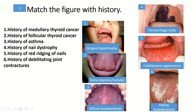A history of follicular thyroid cancer could be found in Cowden syndrome, which manifests with multiple papules in a cobblestone configuration as seen in figure 5. A history of asthma could indicate a patient receiving corticosteroid sprays long-term, which could result in a hemorrhagic bulla. And a history of nail dystrophy could be found in dyskeratosis congenita, which manifests with the triad of skin pigmentation, patchy oral leukokeratosis, and nail dystrophy — so history 4 matches figure 6.